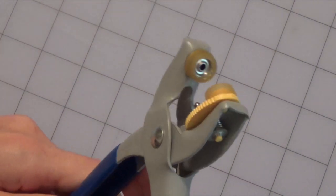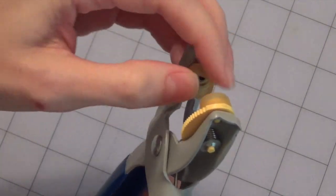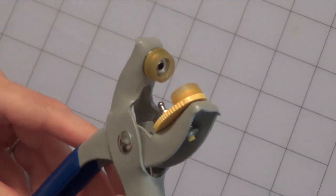First you need to make sure that you have the correct adapters on your pliers. For the 7/16 inch snaps that I'm using, I need both rubber adapters on the jaws.